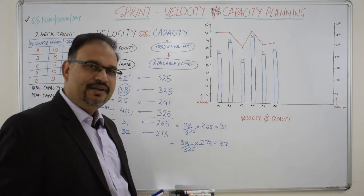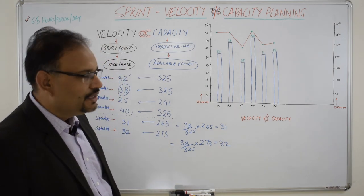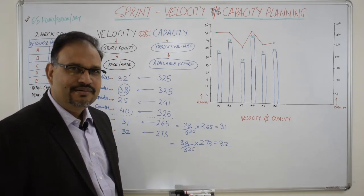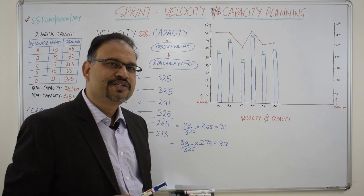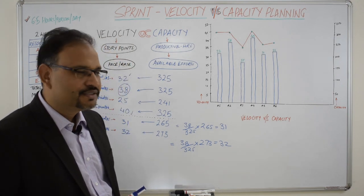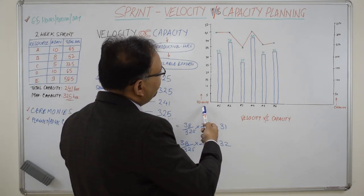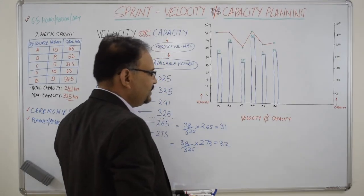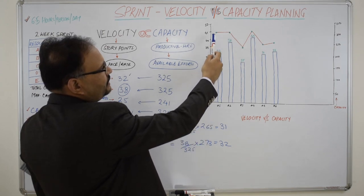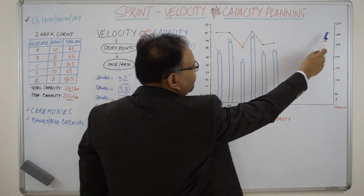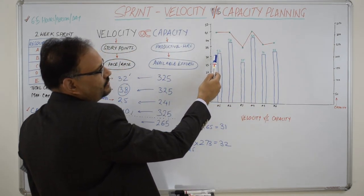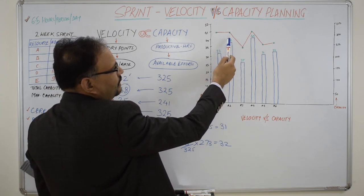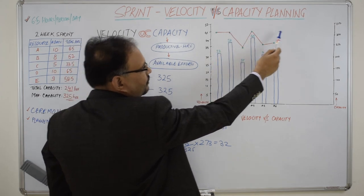We can show the relationship between velocity and the capacity planning using this bi-directional chart. This chart will make more sense to the customer and they can set the right expectation from the team for the subsequent sprints. On the left hand side is the velocity of the team. On the right hand side is the capacity of the team. As you can see for the first sprint the capacity is at 325 and velocity is just 32. On the second sprint velocity is increased to 38 but the capacity remains the same at the same level.